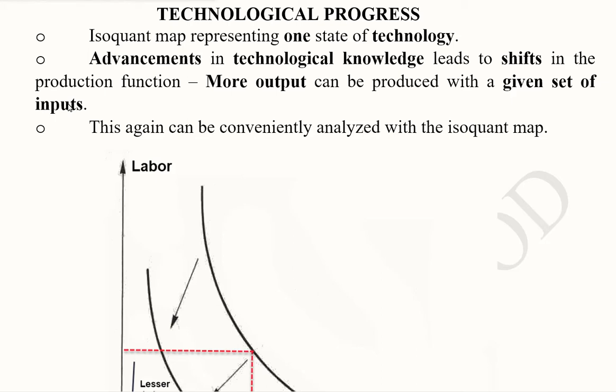For example, these days we talk about information and communication technology. The digital technology has made things easier for the producer to produce with lesser effort and by using the same amount of labor and capital they can produce more than before. So this is an example of technological progress.